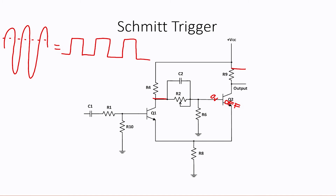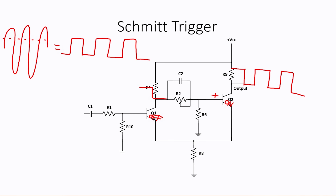Q1 will then turn off, and its output will go high. That high voltage will be felt on the base of Q2, causing Q2 to turn back on and the output to go low again. This will happen every time the input waveform exceeds the threshold level. This concludes Course 102's Day 8 Rewind. Thank you for listening.